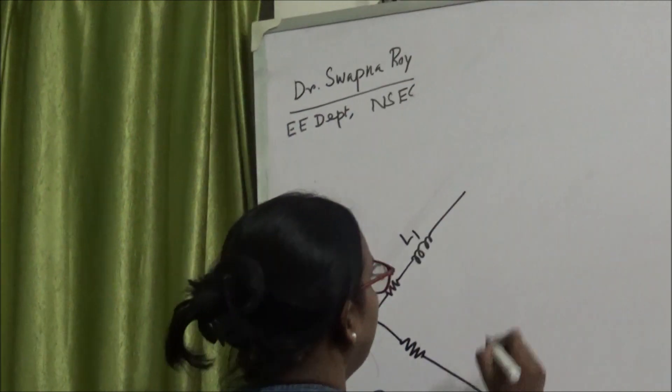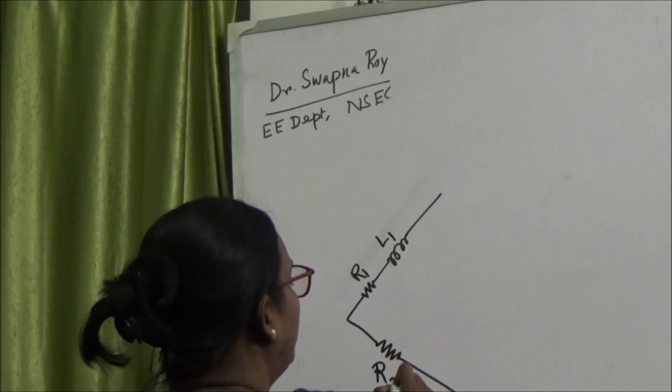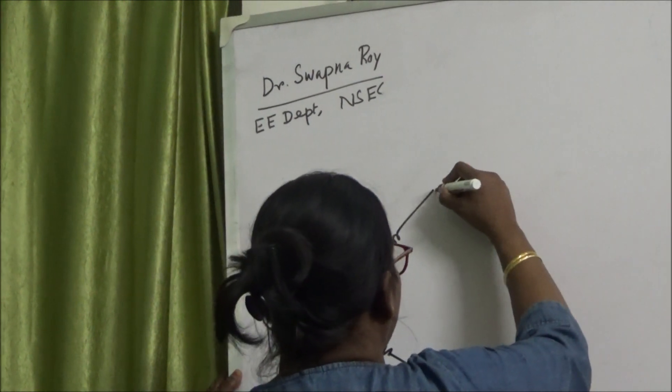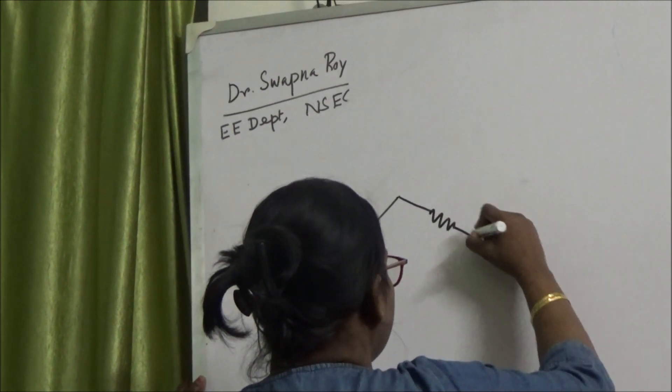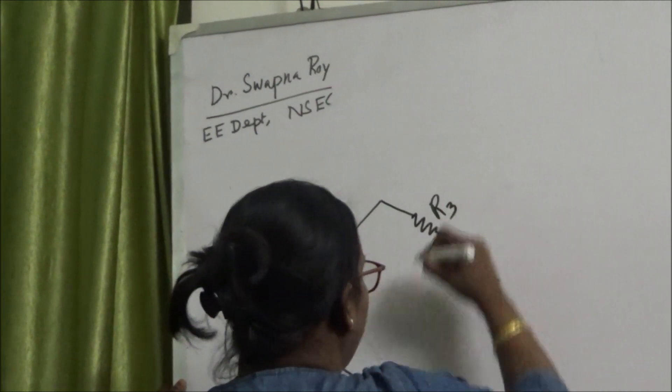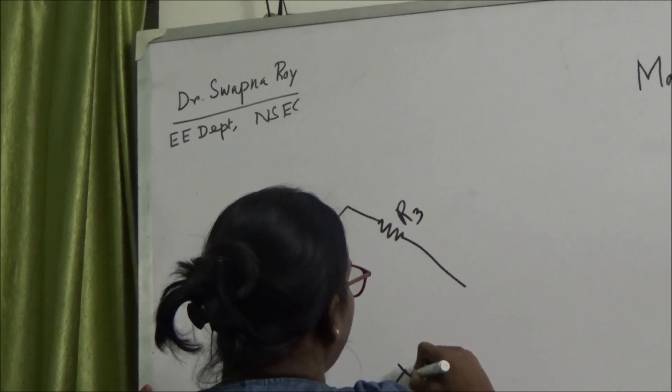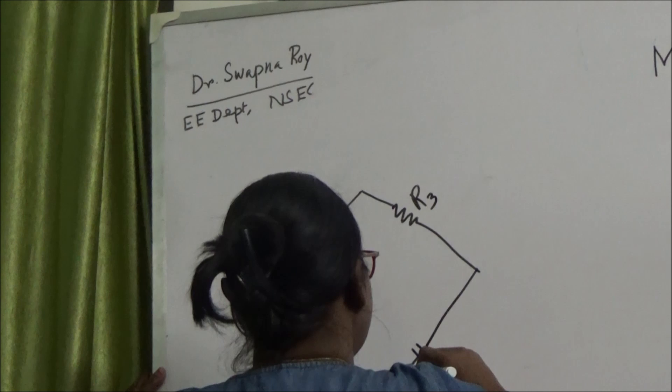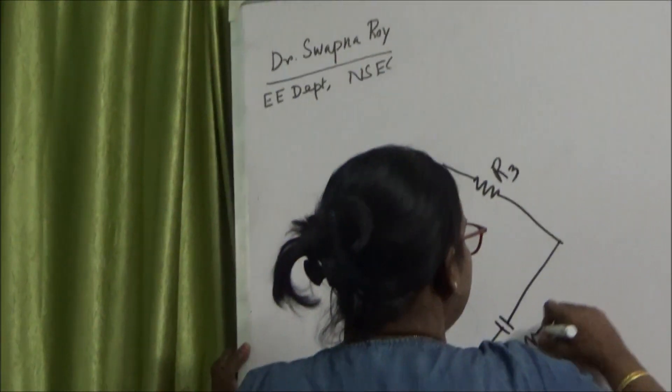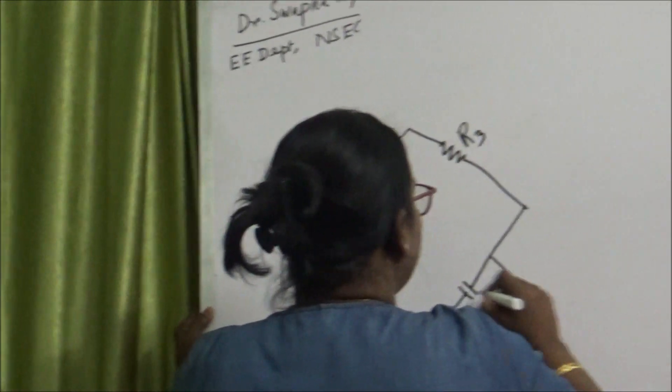In the second arm there is resistance R2. In the third arm there is resistance R3.